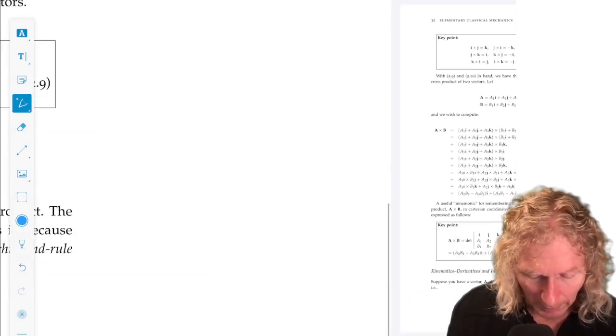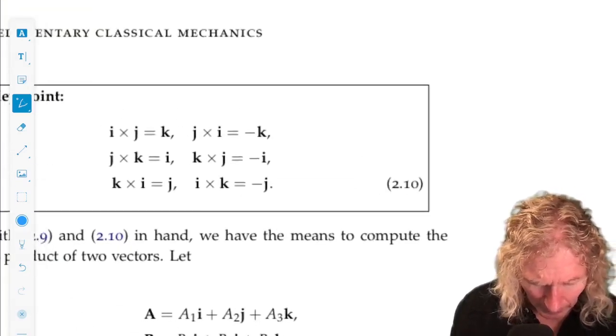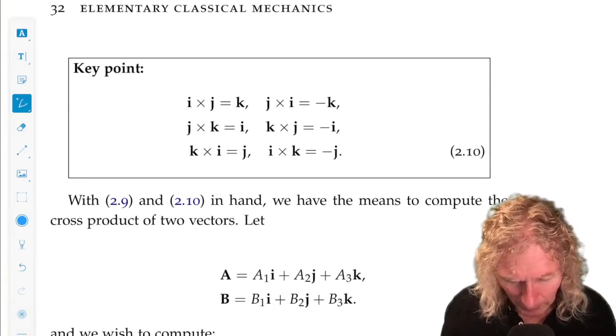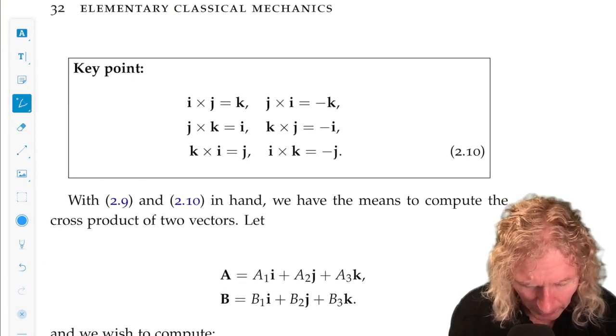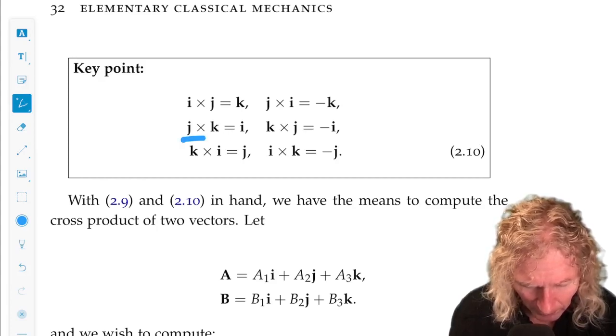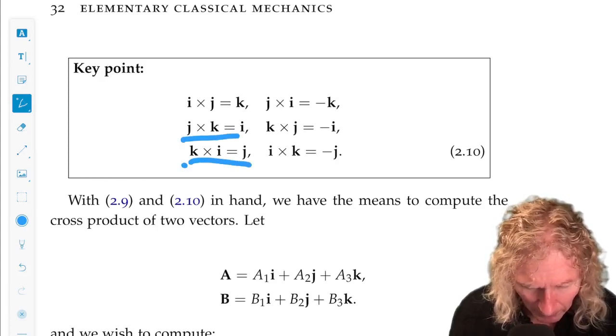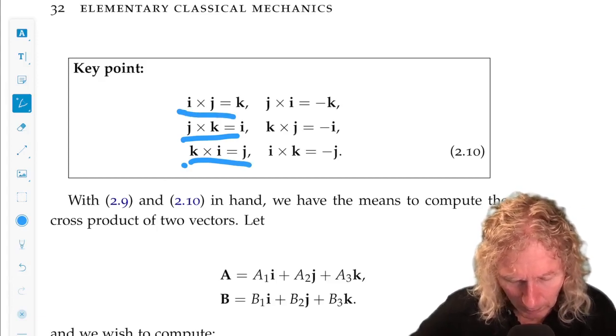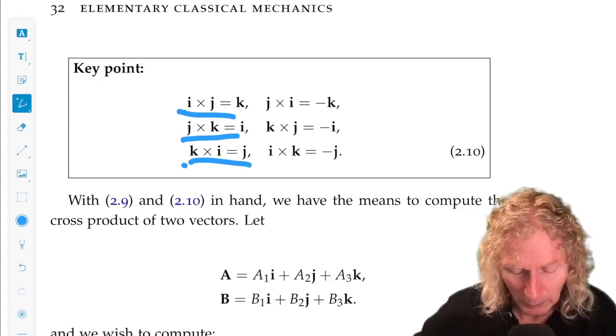Now reasoning in this way, it is not hard to see that i cross j is k, j cross k is i, k cross i is j. You cycle through them.